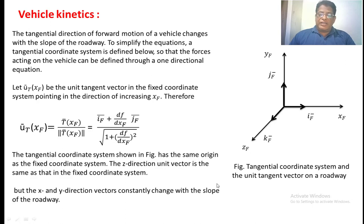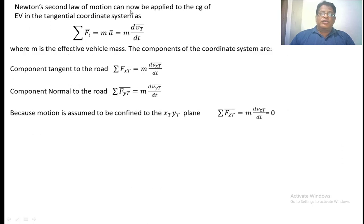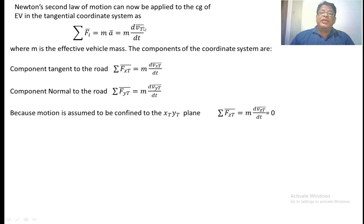The reason we adopt the tangential coordinate system in 2D is to simplify the equations governing the vehicles. Newton's second law of motion can be applied to the EV system. In the tangential coordinate system, sigma Fi equals m times a-bar, which equals m times d(vt-bar)/dt. Here, vt is the tangential component of the velocity.